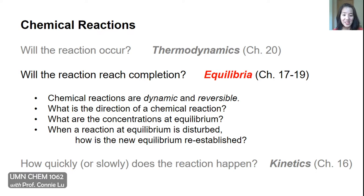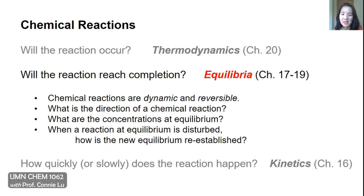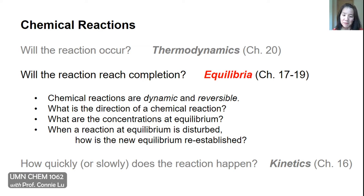In Chapter 17 we'll learn that chemical reactions are dynamic and reversible, and because of this reversibility, sometimes we have to first figure out in which direction the reaction will actually go. Next, when a reaction reaches equilibrium, we'll use quantitative problem solving to determine the concentrations of products and reactants at equilibrium. And lastly, if you start with a reaction at equilibrium and disturb it with an event, how is the new equilibrium re-established?